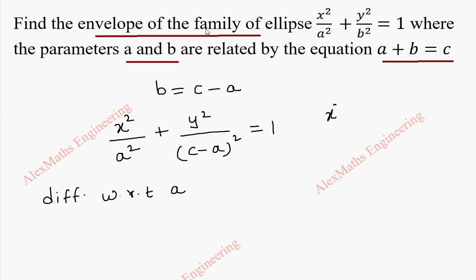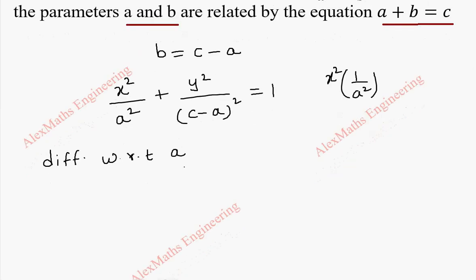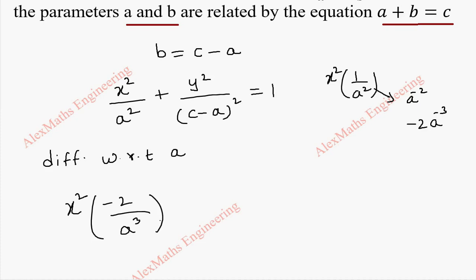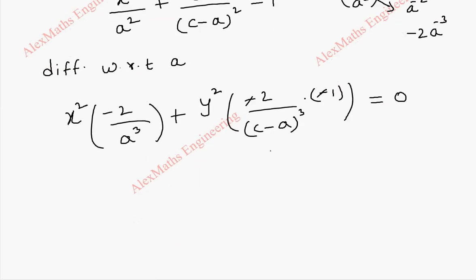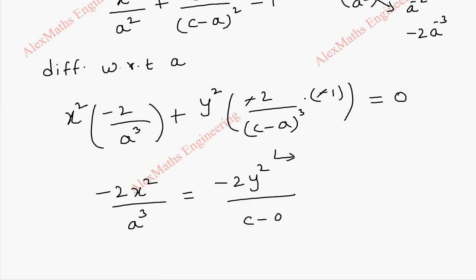The first term is x² · (1/a²). Since x² is a constant, we differentiate 1/a², which is a^(−2), giving −2a^(−3), so it is −2/a³. In the same way, for the second term, y² is a constant and we differentiate 1/(c−a)², giving −2/(c−a)³ multiplied by the differentiation of (c−a), which is −1. The differentiation of 1 on the other side is 0. The two negatives cancel, and taking the second term to the other side gives −2x²/a³ = −2y²/(c−a)³.